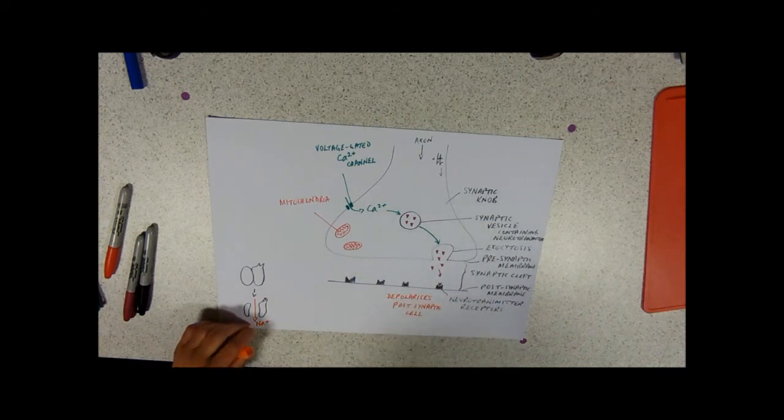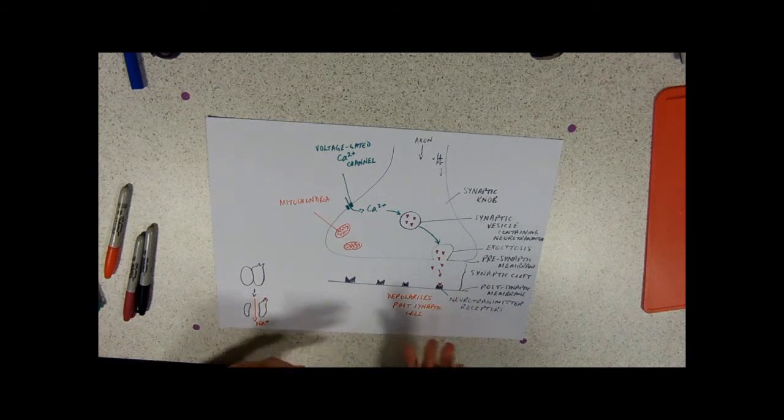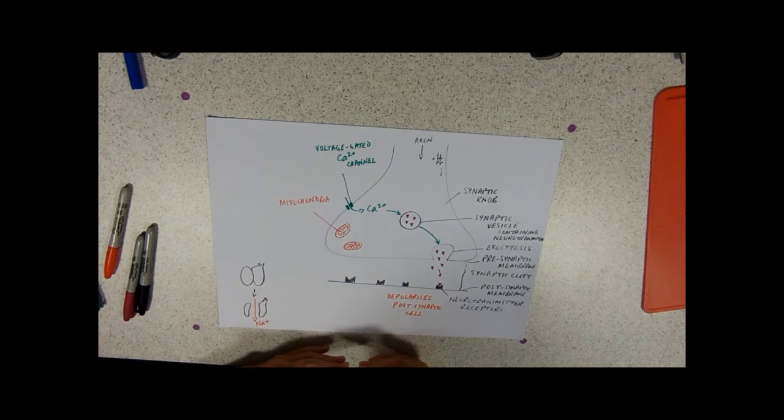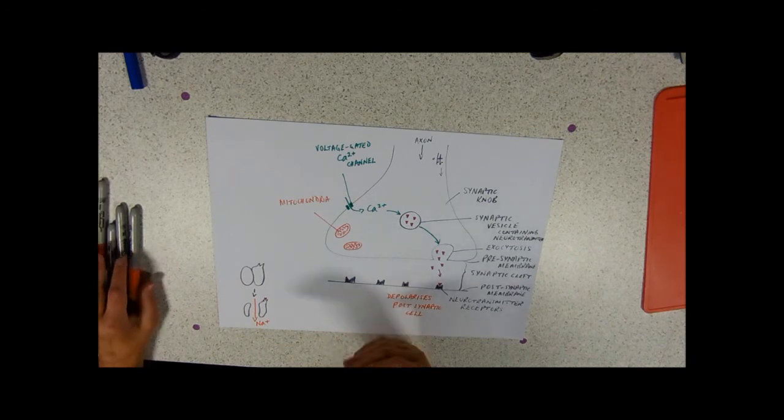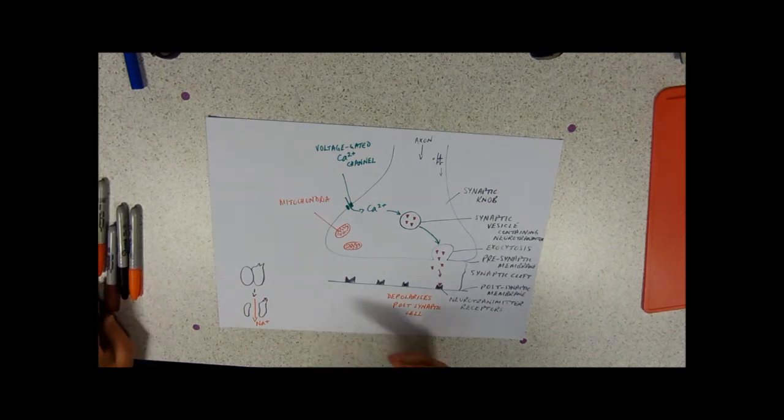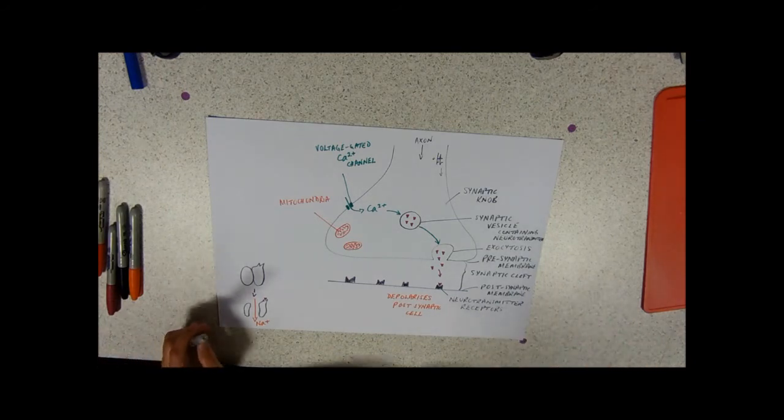If that's another neuron, then obviously that wave of depolarization will carry on down through the dendron or through the cell body and into an axon and to its own synapse or something else. If it's a muscle cell, for those people doing musculoskeletal anatomy, it will open calcium ion channels which will trigger that start of the muscle contraction.